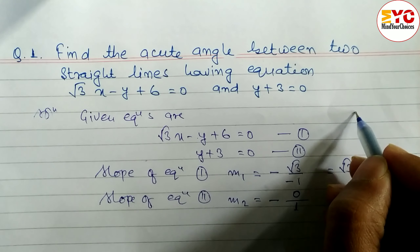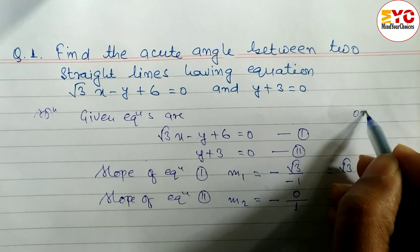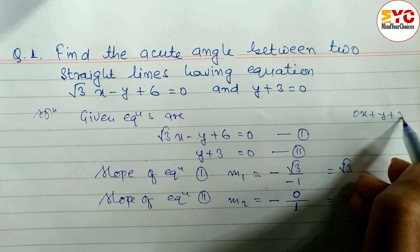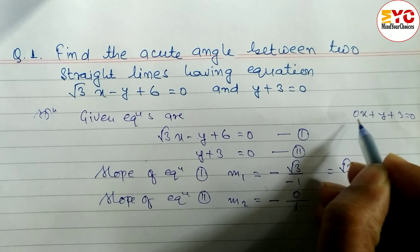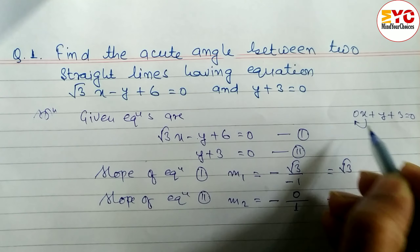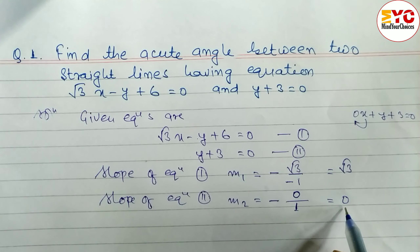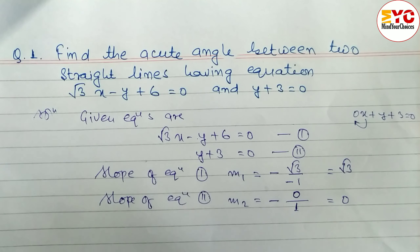If x is not present, you can write the equation in the form 0x plus y plus 3 is equal to 0, so coefficient of x is 0. Therefore we write 0 here and we get the slope of equation 2, m2, is equal to 0. Hope you understand up to here.